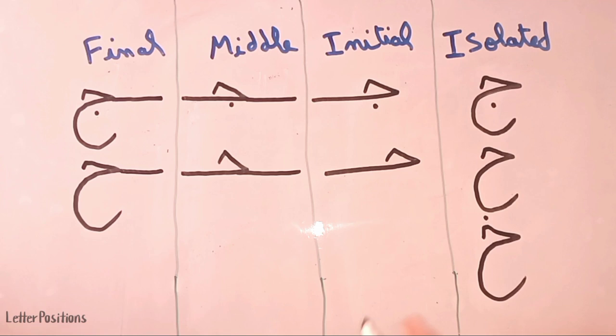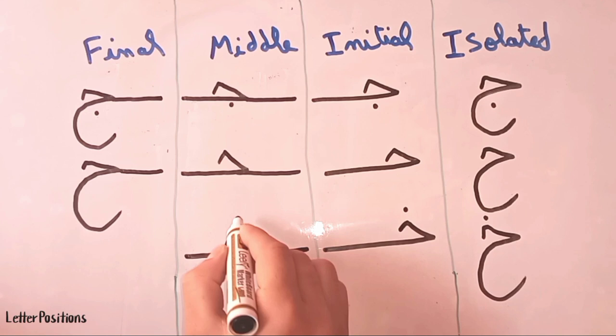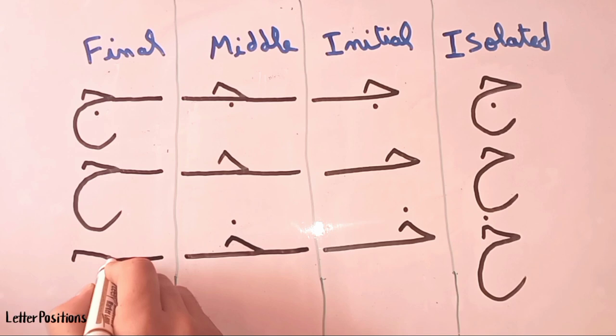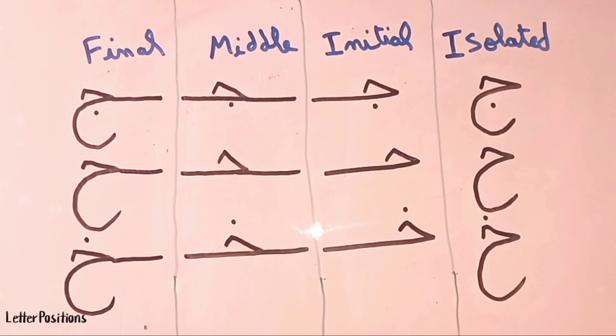Next is harfu al-kha'. Same shape as al-ha' and al-jim, but we put a dot on the top. We start from the straight line — this is the middle form of al-kha'. The final form is the same thing with a dot on the top.